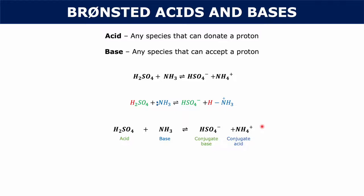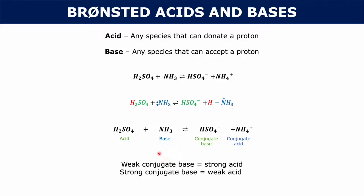That's basically an acid and a base under the Brønsted model. Whenever you have a weak conjugate base, that's a strong acid. When you have a strong conjugate base, that's a weak acid. Essentially, we can use the strength of our conjugate base to find out the strength of the acid: if your conjugate base is weak, your acid is strong; if your conjugate base is strong, your acid was weak.